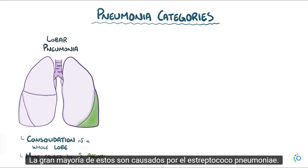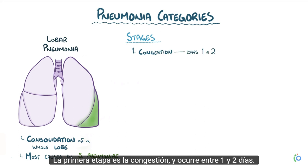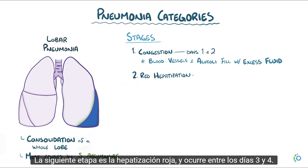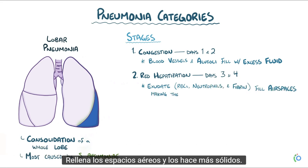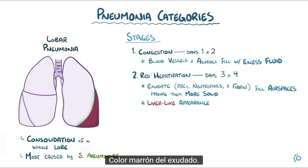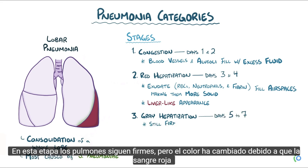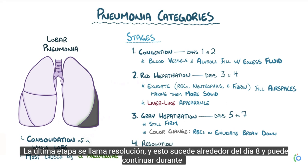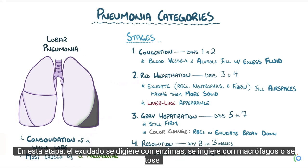The vast majority of lobar pneumonias are caused by Streptococcus pneumoniae. Lobar pneumonia happens in stages. The first stage is congestion, between days one and two, where blood vessels and alveoli start filling with excess fluid. The second is red hepatization, days three and four, where exudate containing red blood cells, neutrophils, and fibrin fills the air spaces — the lungs take on a reddish-brown liver-like appearance. The third stage is grey hepatization around days five to seven, where the lungs are still firm but colors change as red blood cells break down. The final stage, resolution, begins around day eight and can continue for three weeks, as exudate is digested by enzymes, ingested by macrophages, or coughed up.